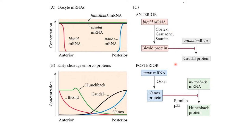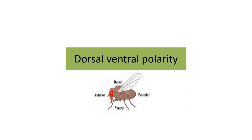Now we will learn how the dorsal and ventral poles are formed in Drosophila and what kind of genes are involved. Before starting, let's revise what is dorsal and what is ventral. Dorsal is the portion of a Drosophila that faces upwards toward the roof side, and the belly portion facing toward the floor is ventral.